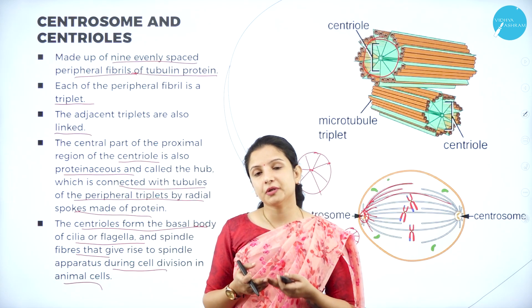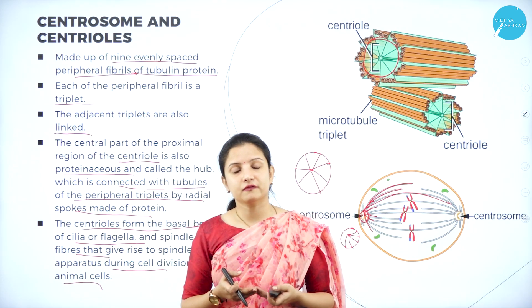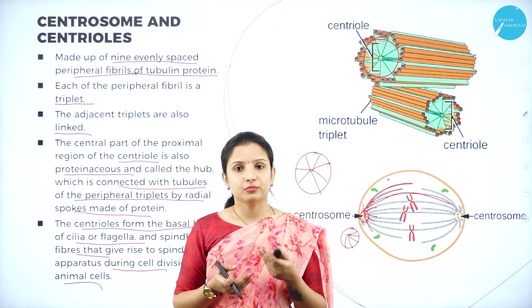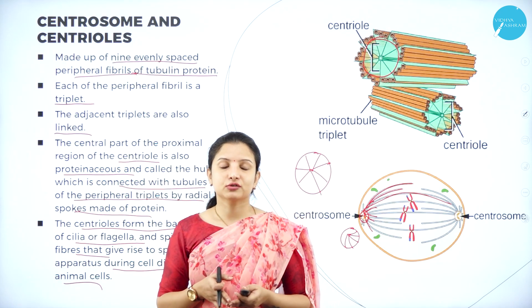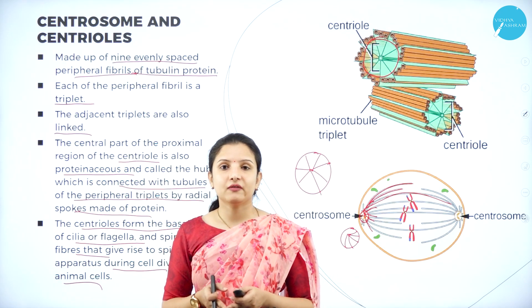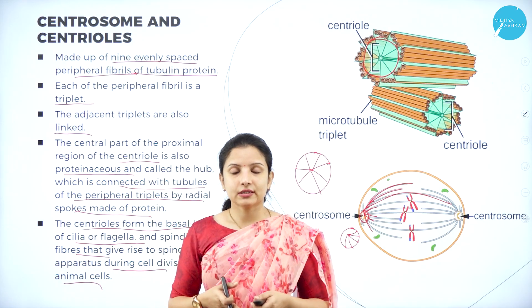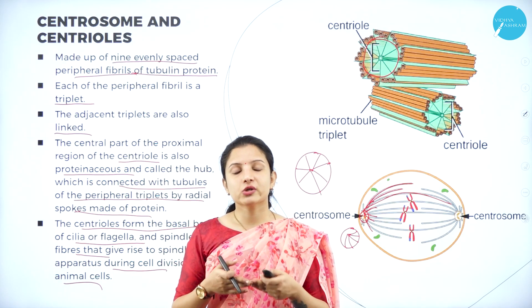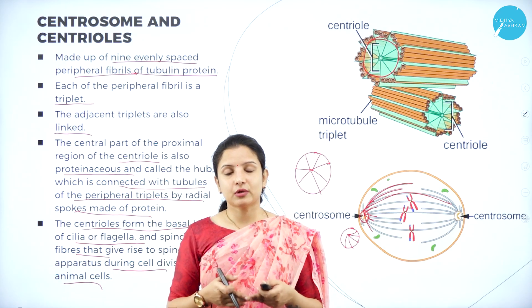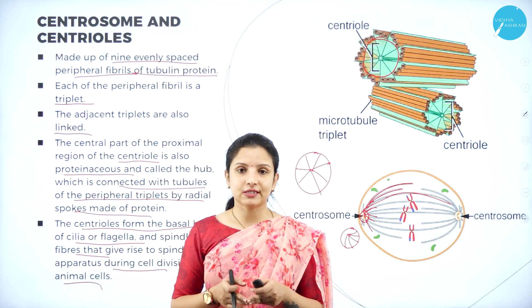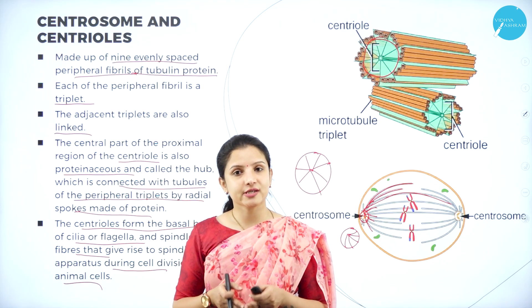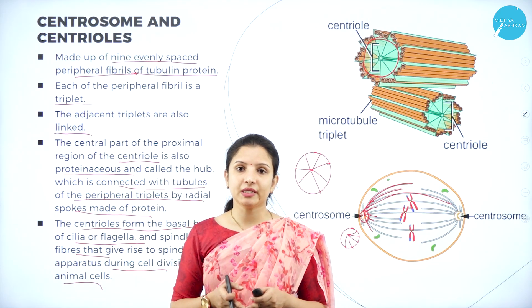I hope you understood the session well, where we discussed the cilia, flagella, centriole, and centrosome. The centrioles form the basal body of cilia and flagella and help give rise to spindle fibers needed for chromosome separation during cell division. In the coming session we shall discuss about chromosomes and their components.